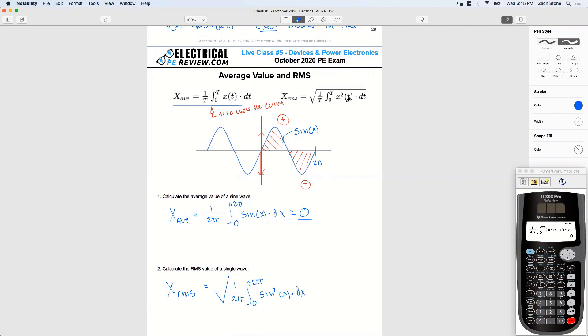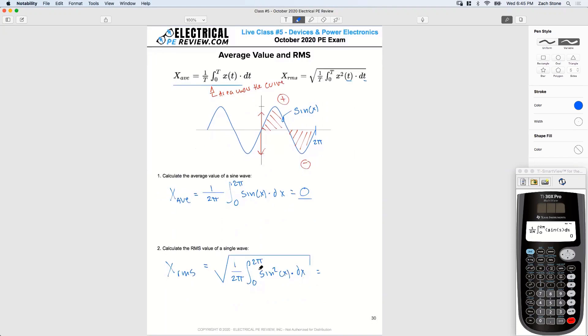Times DX. Or sine of T DT, same thing. And I want to make sure that whole value is under that square root. Again, anytime I see a pi, I know I'm in radians. Double check my mode. Make sure I'm in radians. Great.